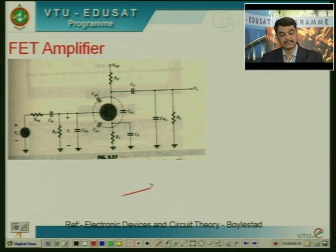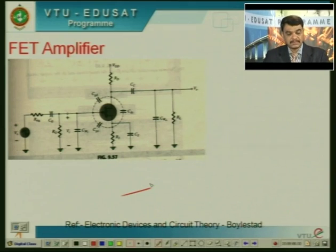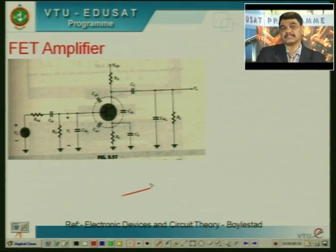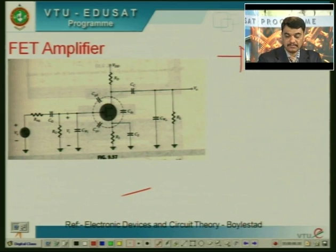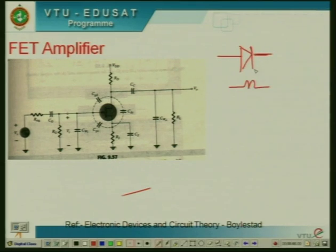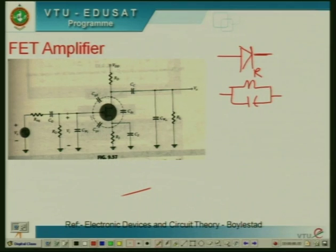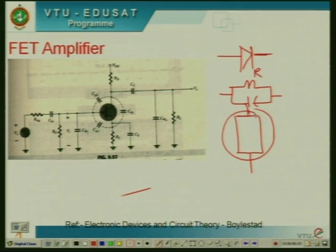For the FET amplifier circuit shown in figure, we have to analyze this with high frequency response. We know that the diode junction can be replaced with its equivalent model. At high frequencies, the diode can be replaced with its R and a capacitor C. In this transistor amplifier at high frequencies, due to the equivalent model of the junction FET, there is a capacitance between the drain and the gate, denoted as CGD. There is a capacitance between the gate and source, defined as CGS. There is also a capacitance CDS existing due to the leads acting as a parallel plate capacitor.